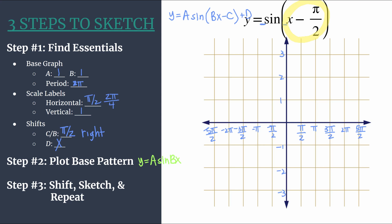We know for sine that's not reflected, our base pattern is zero, maximum, zero, minimum. So we will lightly mark, or in a different color than we'll use for our final graph, we will start with a zero on the origin.